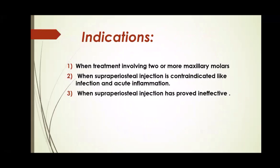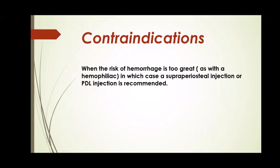The indications are: first, when treatment involves two or more maxillary molars; second, when the supraperiosteal injection is contraindicated, such as in cases of infection and acute inflammation; third, when the supraperiosteal injection has proved ineffective. The contraindication is when the risk of hemorrhage is too great, as with a hemophiliac, in which case a supraperiosteal injection or PDL injection is recommended.